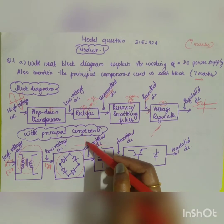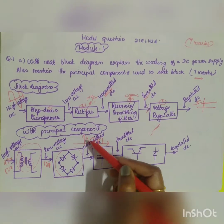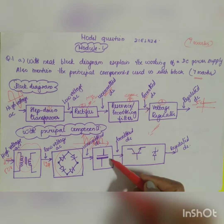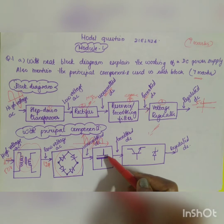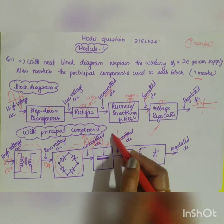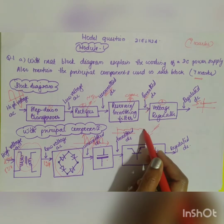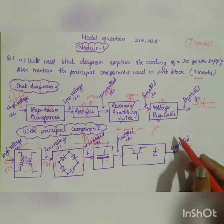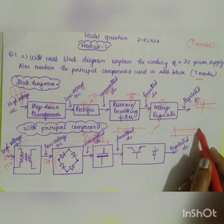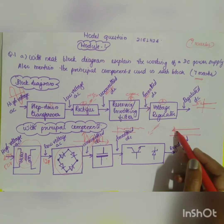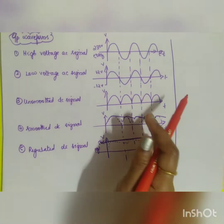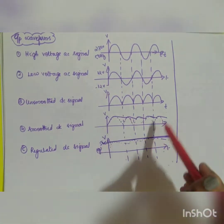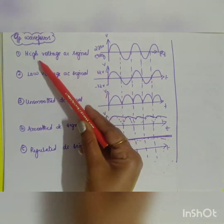From the bridge rectifier you get an unsmoothed DC signal — present in both the positive and negative half cycles. This unsmoothed DC signal is given to a capacitor; adding a capacitor to the rectifier gives you a smooth DC signal. That smooth DC is then given to the voltage regulator, which maintains it permanently at a particular regulated voltage.